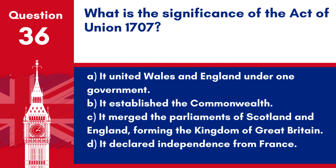Question 36. What is the significance of the Act of Union 1707? a. It united Wales and England under one government. b. It established the Commonwealth. c. It merged the parliaments of Scotland and England, forming the Kingdom of Great Britain. d. It declared independence from France.